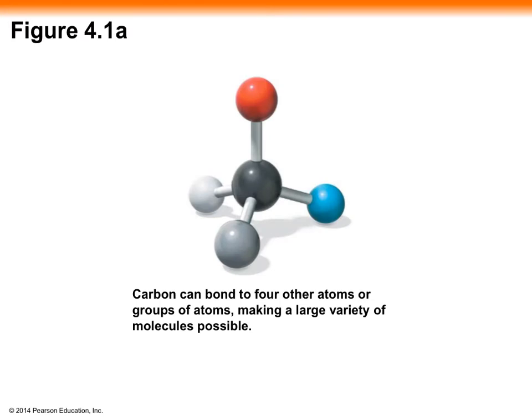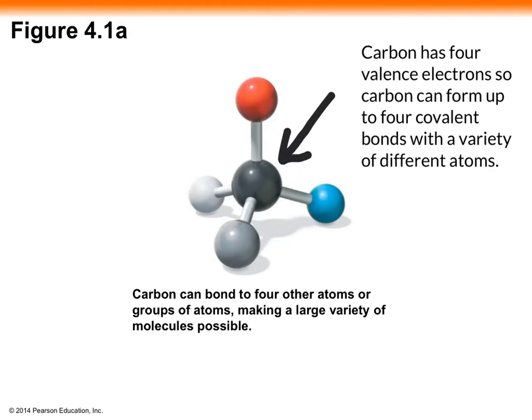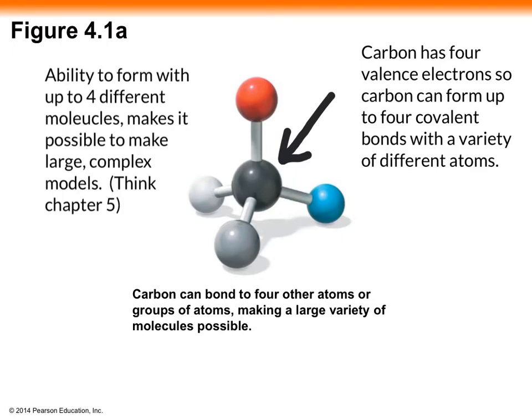Carbon is depicted here in the center by this black ball. Carbon is unique in that it has four valence electrons, so it can form up to four covalent bonds with a variety of different atoms. This ability that carbon has to form bonds with up to four different atoms makes large, complex molecules possible, like the organic compounds we talk about in Chapter 5.